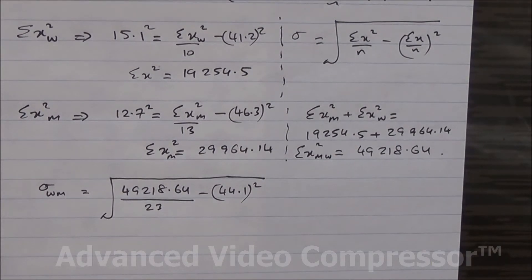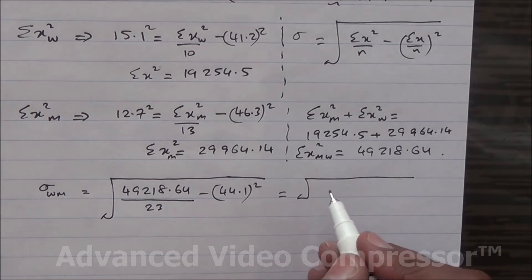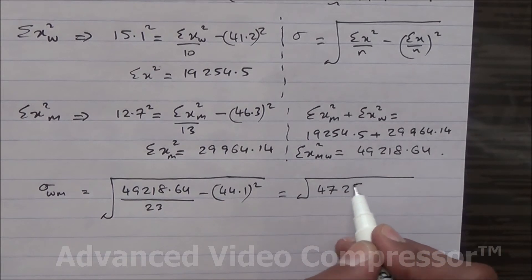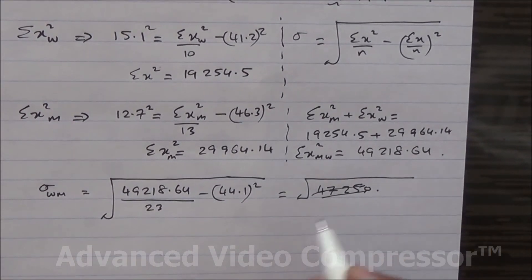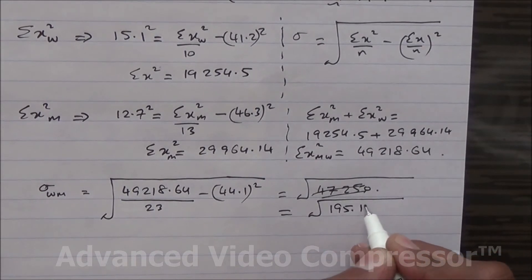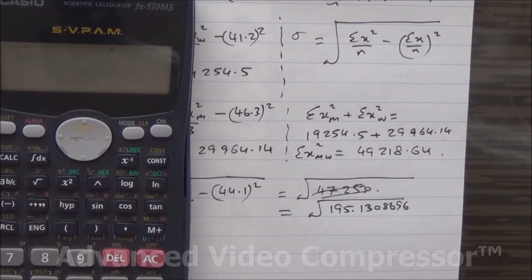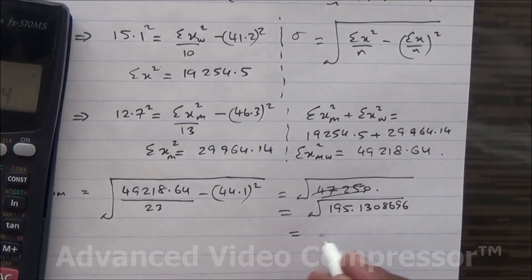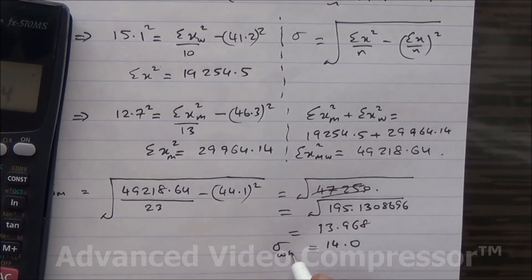49,218.64 divided by 23, minus 44.1 squared. That gives us the square root of 195.1308696. If you do the square root of that, you get 13.968, which is basically 14.0. That's the standard deviation of the whole group.